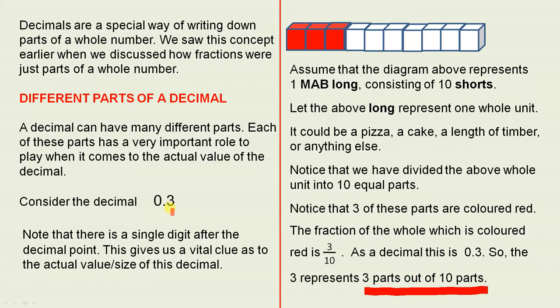So when you have a single digit after the decimal point, that is how many parts out of 10. That's what the three means. If it was a 7, it would be 7 parts out of 10.